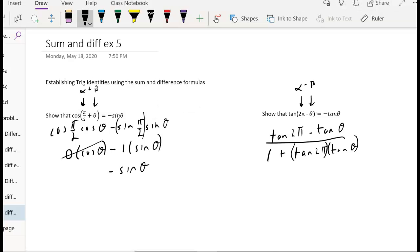So what is the tangent of 2 pi? Well, at 2 pi, y is 0. Same thing as at 0, y is 0. So the tangent here is 0. So this is going to be 0 minus the tangent of theta over 1 plus 0 again times the tangent of theta.